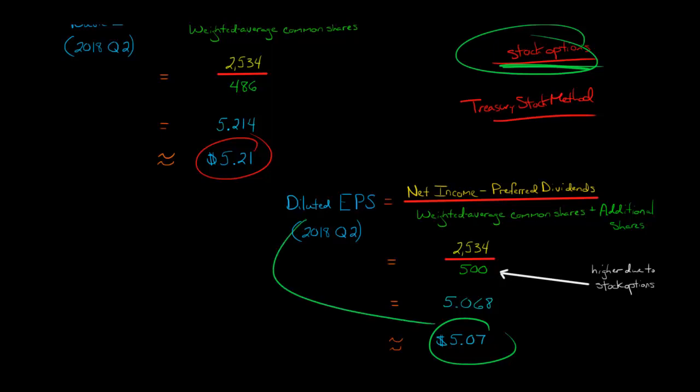So this is the diluted earnings per share. So just to summarize, earnings per share is $5.21 a share. However, if the people out there holding stock options for Amazon stock were to exercise those options, then the earnings per share could go as low as $5.07 a share.